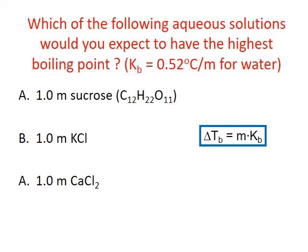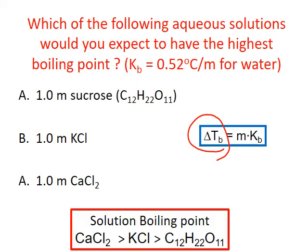Boiling point elevation, delta T, is dependent on the molality of the solution and the boiling point elevation constant. Since all the solutions have water as their solvent, they all have the same boiling point constant — 0.52 degrees Celsius per molal. They also all have the same molality. If both concentration and boiling point constant are the same, we would expect all these to have the same elevation in boiling point above 100 degrees Celsius.